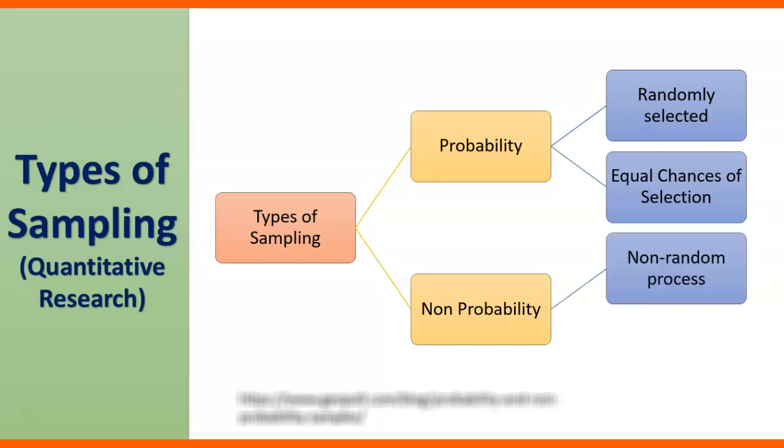In non-probability sampling technique, a non-random process is there and not equal chances of selections. So as compared to the probability sampling which says that there are equal chances of selection, on the contrary in non-probability they are not equal chances of selection of a sampling unit.